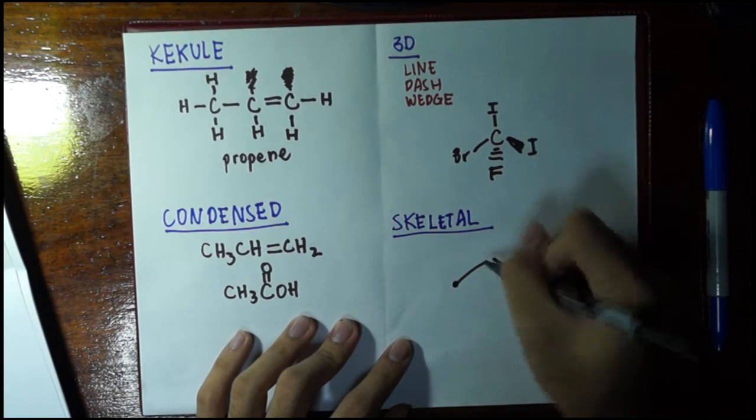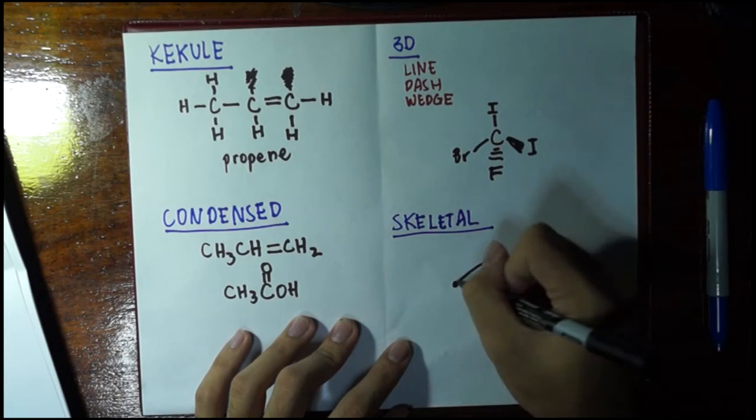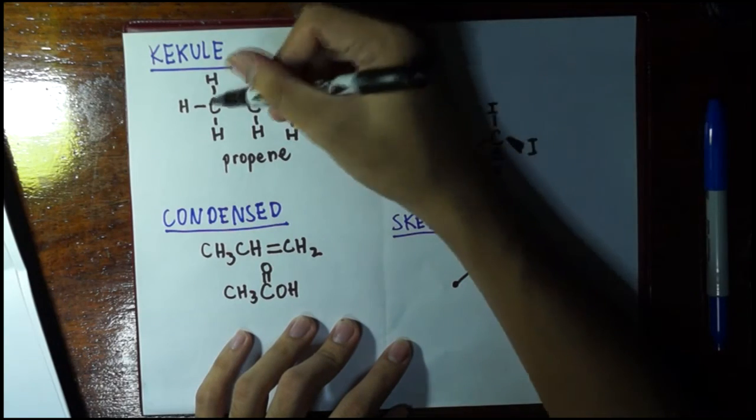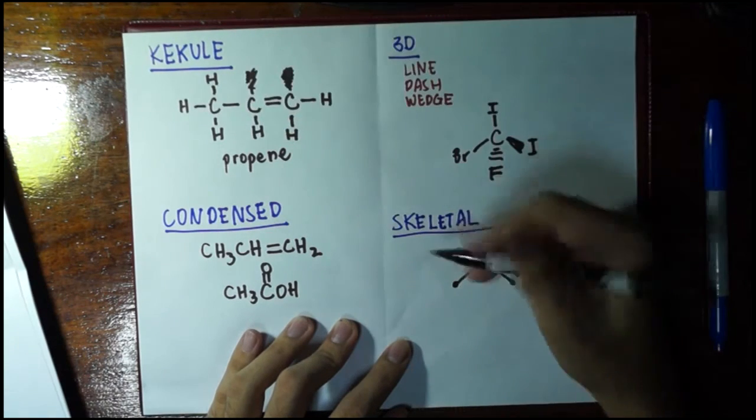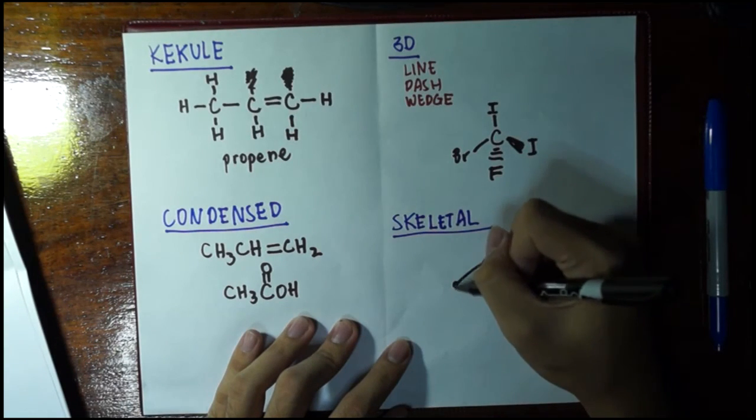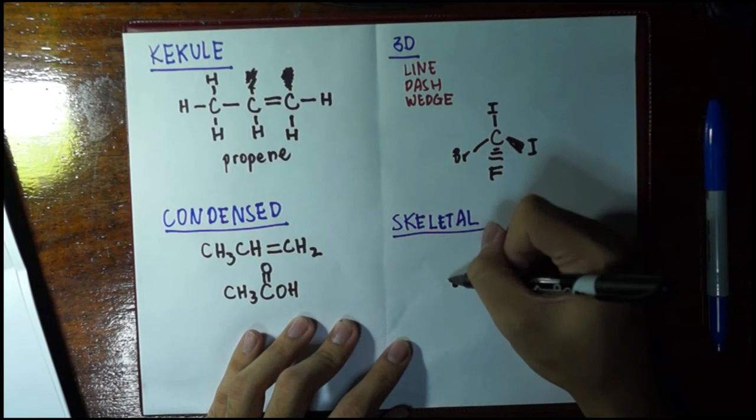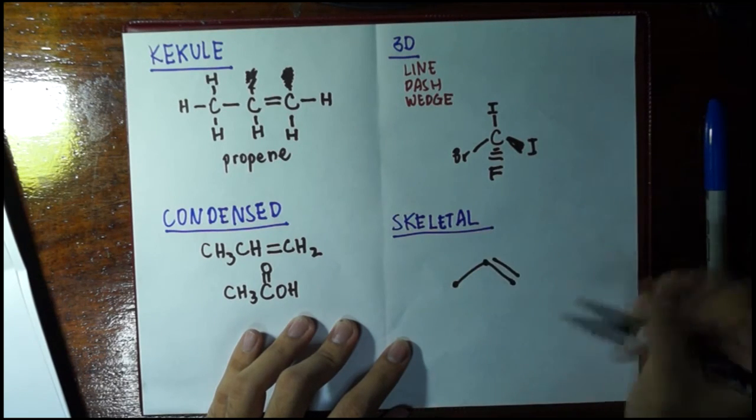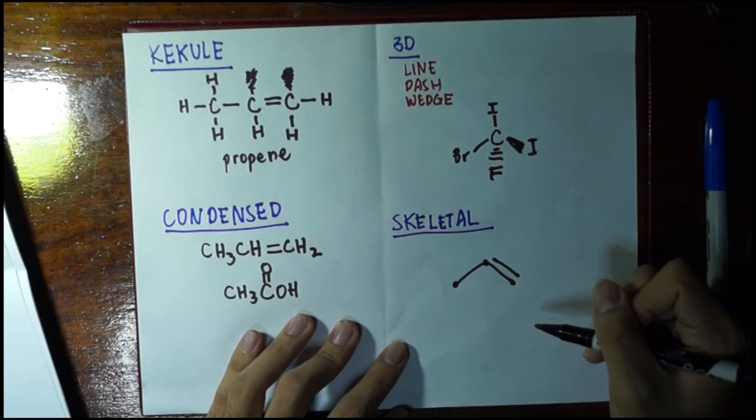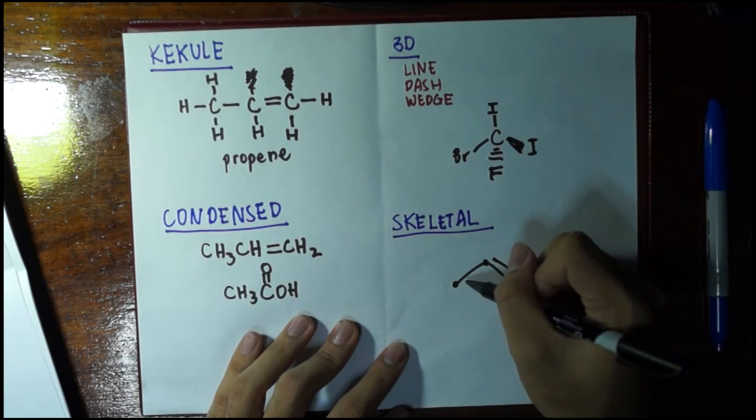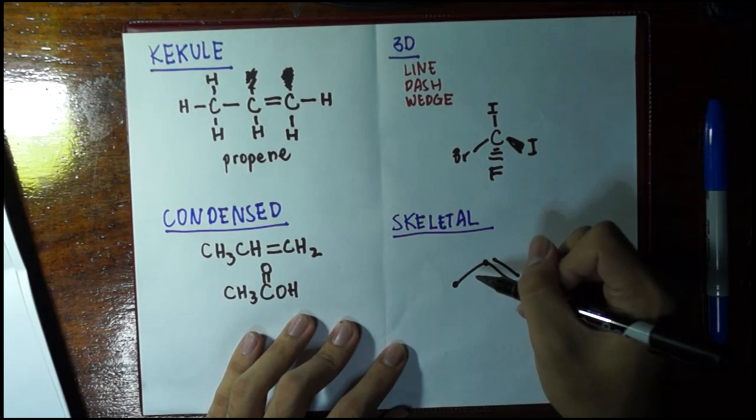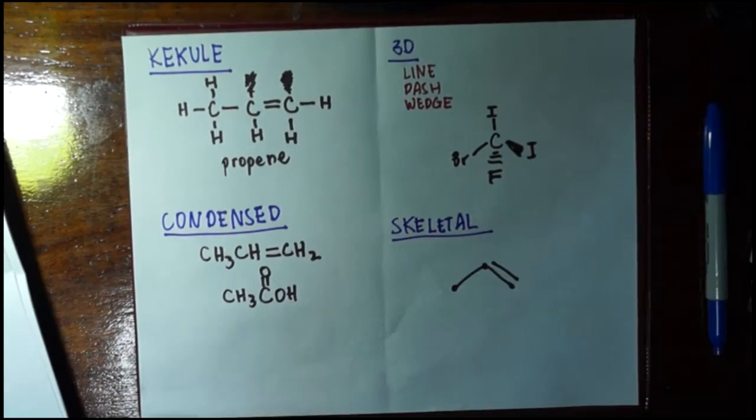So since in this drawing we have 3 points, this will represent the 3 carbons in propene. As I said, any carbon to hydrogen bond is implied, meaning it's not going to be drawn anymore—like with a single bond to H, not anymore. It is assumed that we already know that as long as the carbon is not yet complete with the 4 bonds, the remaining bonds to complete it would be H.